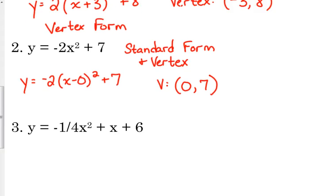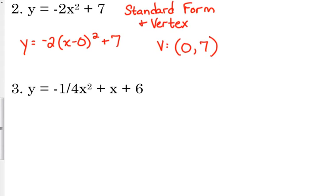Let's do one more. And this one's a little tricky. We didn't do any completing the square like this. And I'm honestly not all that concerned about you being able to do this, but I do want to make sure that you've seen it. So negative 1 fourth x² + x + 6.